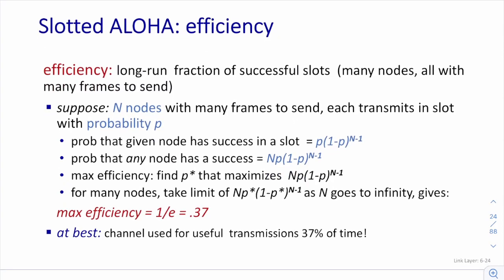For slotted ALOHA efficiency: with N nodes and retransmission probability p, the probability that a given node succeeds in a time slot is p times (1-p)^(N-1). The maximum efficiency is found by optimizing p. As N goes to infinity, the efficiency converges to approximately 37%. That means only 37% of time slots are successful, and the remaining 63% are either collisions or idle.